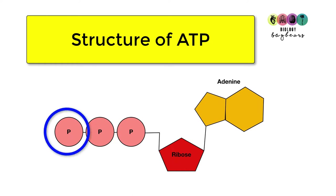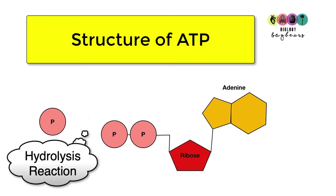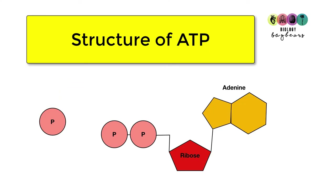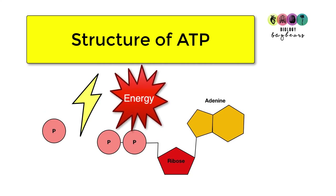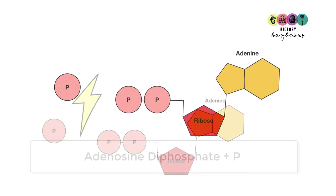When considering how ATP releases energy, we focus on the terminal — or last — phosphate and the bond that attaches it. This is sometimes called a high-energy bond, but it's better described as an unstable bond, easily broken by the addition of water. When water is added to ATP, that bond breaks, releasing the last phosphate and energy.